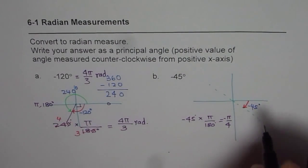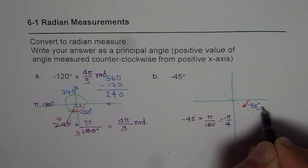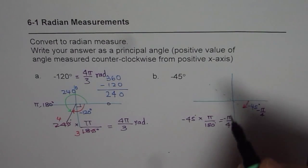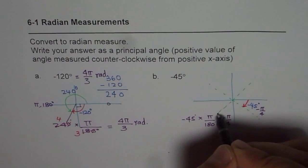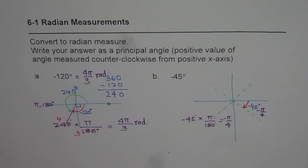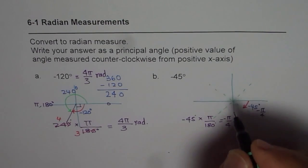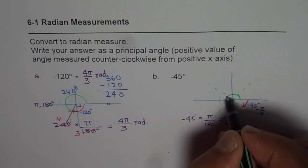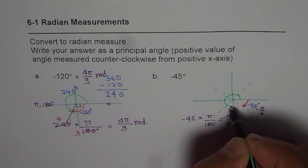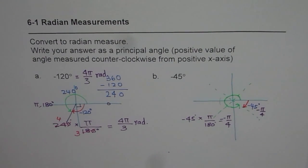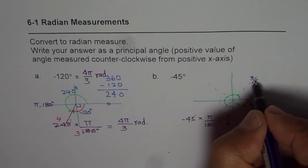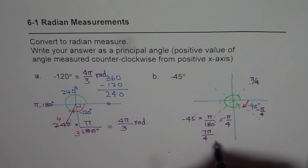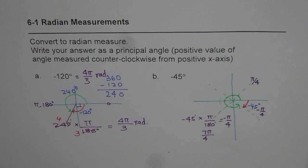We know the angle is minus π/4, so we need to find what it is from the other side. We can divide our plane into sets of 45 degrees: 1×45, 2×45, 3×45, 4×45, 5×45, 6×45, 7×45. Seven of these 45-degree steps, which is 7 × π/4, gives us 7π/4. So the principal angle is 7π/4.